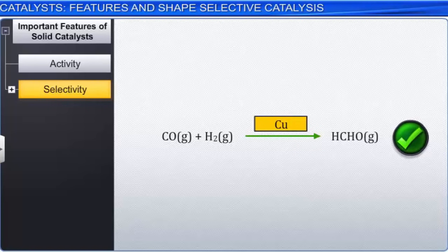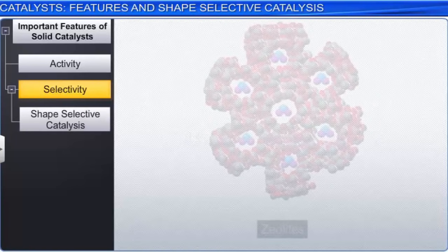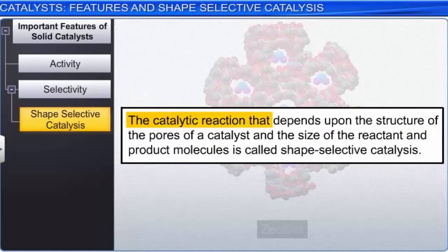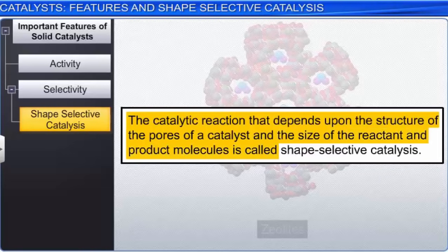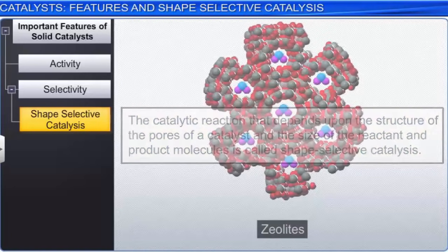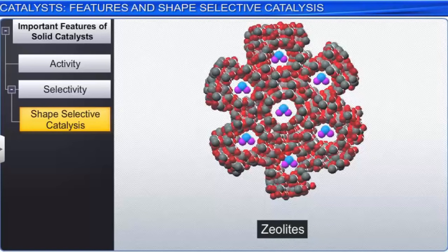The catalytic reaction that depends upon the structure of the pores of a catalyst and the size of the reactant and product molecules is called shape selective catalysis. An important category of compounds that act as good shape selective catalysts are zeolites — microporous crystalline solids that possess well-defined honeycomb-like structures. Chemically, zeolites are aluminum silicates with the general formula M(x/N) [Al O, Si O₂]y · z H₂O, where N is the charge on the metal ion (either sodium, potassium, or calcium), and z is the number of water molecules of hydration.